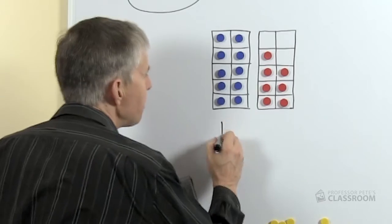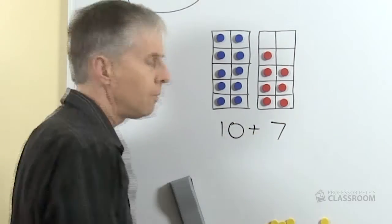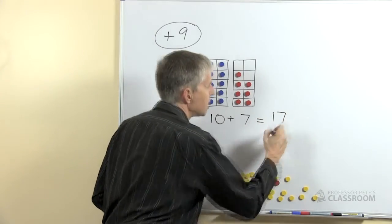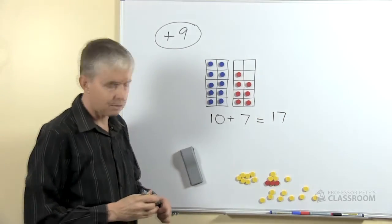So here's an example. We're adding 10 plus 7, and of course as I said that's a nice easy place value question. 10 plus 7 is 17.